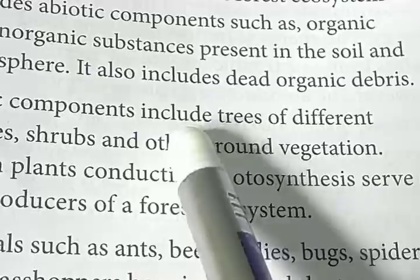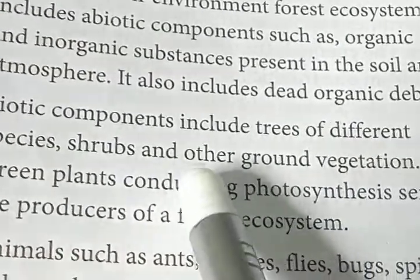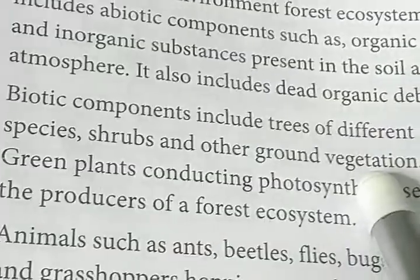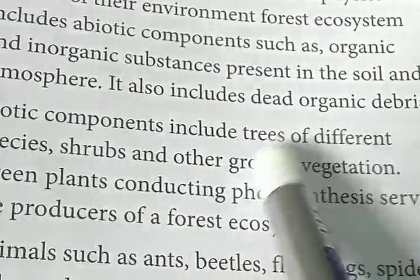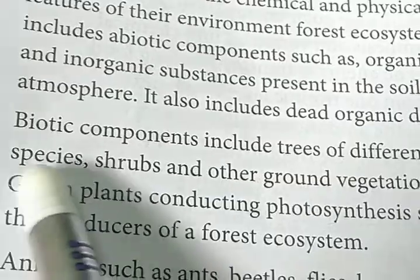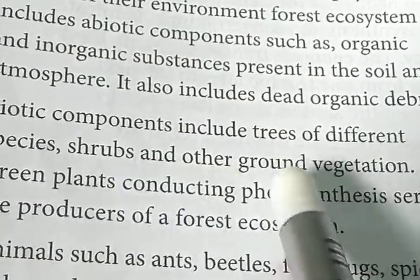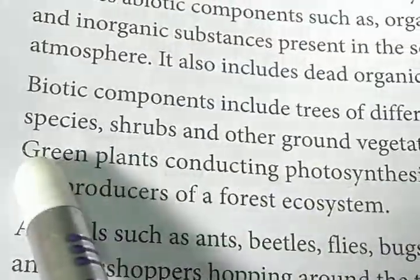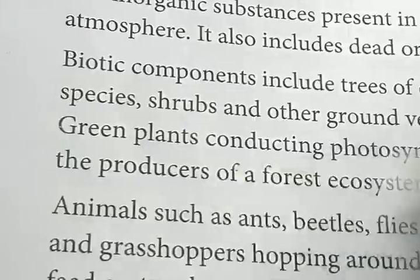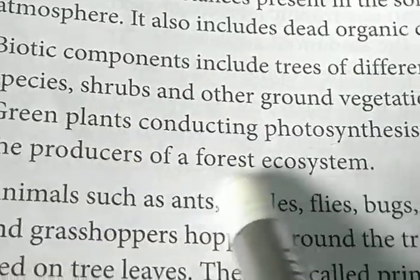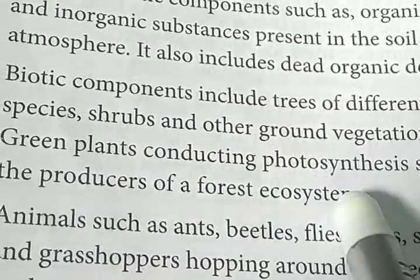Biotic components include trees of different species, shrubs, and other ground vegetation. Green plants conducting photosynthesis serve as the producers of the forest ecosystem. So the main producers of the forest ecosystem are green plants.